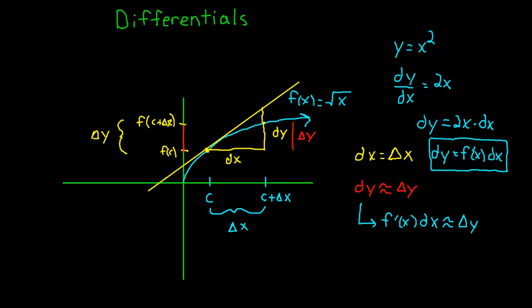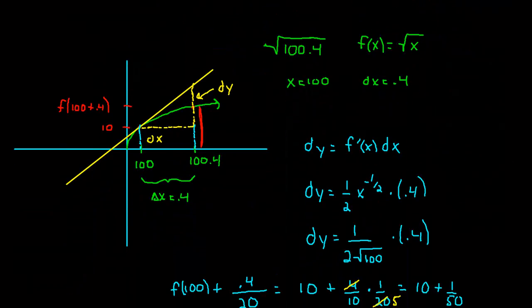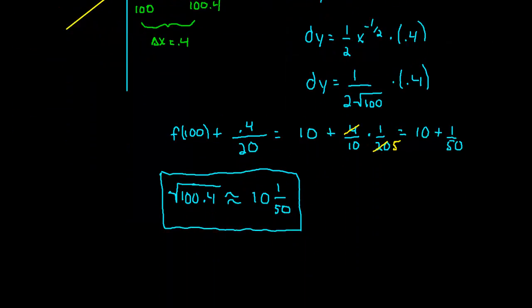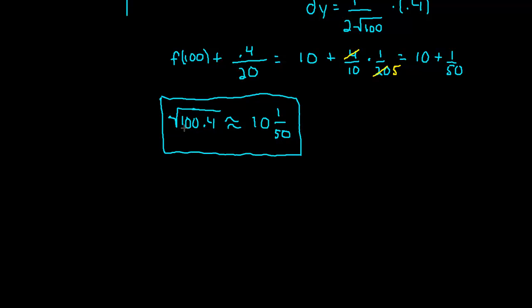From there, we looked at an example and we saw that differentials are really good evaluators, really good approximators of function values. If you have a function and you want to approximate that function at a given value, you can use differentials, which is what we did right here to approximate that value. And in this case, we said that the square root of 100.4 was approximately 10 and 1/50th, and that was pretty accurate.